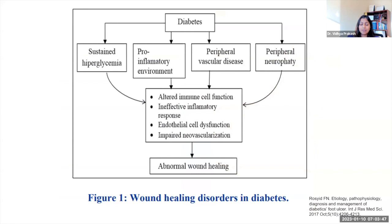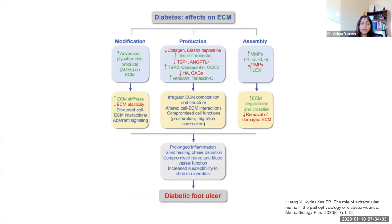What about diabetes in particular makes this such a good milieu for infection? Sustained hyperglycemia, the pro-inflammatory environment, and the combination of peripheral artery disease and peripheral neuropathy alters immune function, affects the inflammatory response, causes endothelial cell dysfunction, and impairs neovascularization — ultimately leading to abnormal wound healing. Let's take a closer look at what's going on in the extracellular matrix of the dermal layer in a diabetic that makes it so prone to lack of wound healing and ultimately infection.